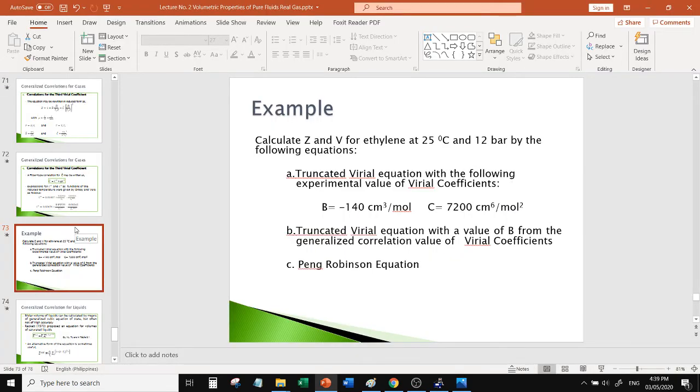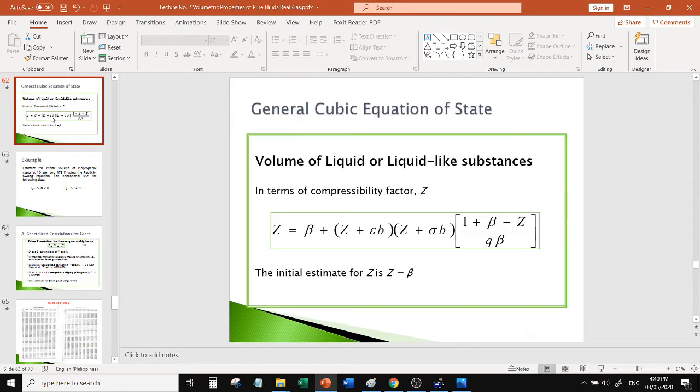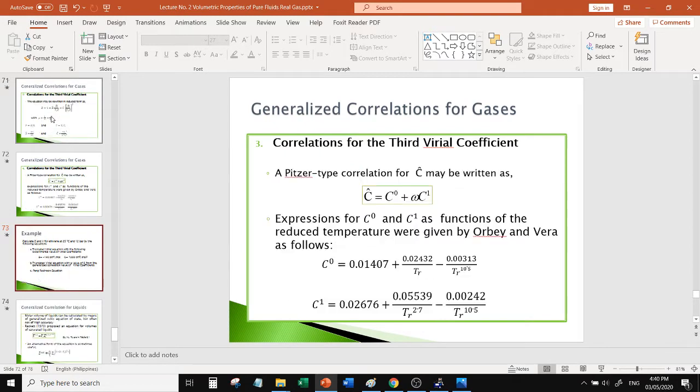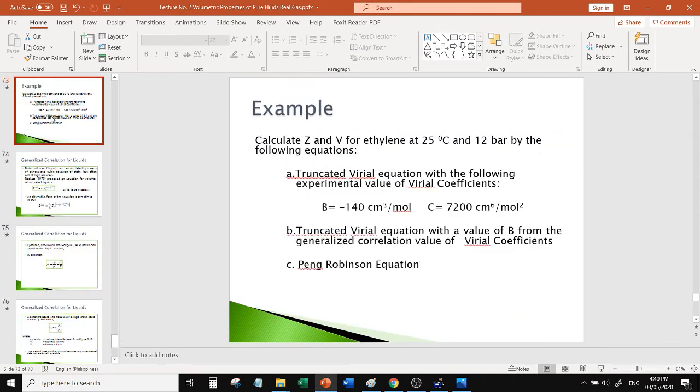Hello! Okay, for this lecture we will solve an example for the Virial equation and the truncated Virial equation with the value of V from the generalized correlation, and also an application of the Peng-Robinson equation. The general cubic equation of state, Peng-Robinson is here in the general cubic equation of state, a comparison.